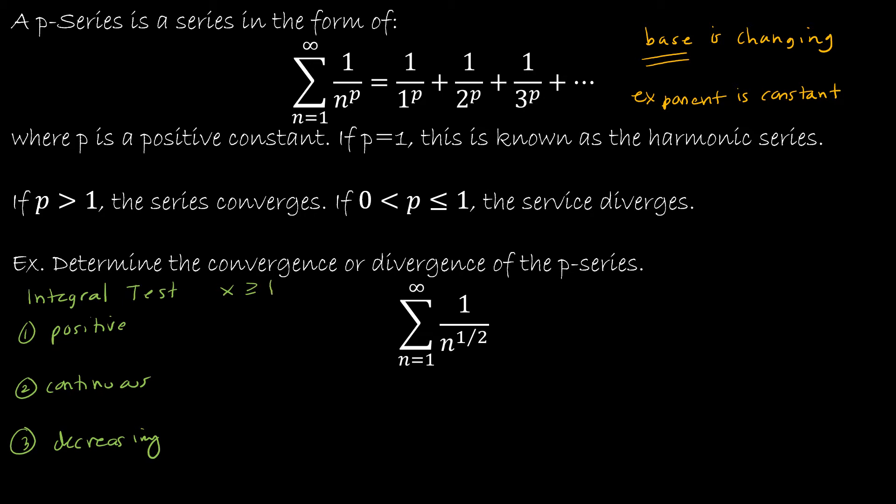So is it positive? Remember, we're looking at f of x being that function of 1 over x to the 1 half. So if x is greater than or equal to 1, is this value always going to be positive? Yes, it is. Is it always going to be continuous? Well, for x is greater than or equal to 1, it sure is, because 0 is not included.